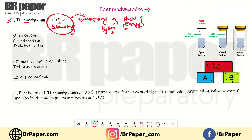Now we have some terms here — the types of thermodynamic systems. These are: open system, closed system, and isolated system. First of all, what is an open system? An open system is a system in which both mass and energy are exchanged with the surroundings.